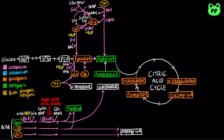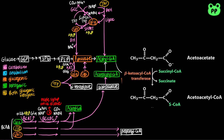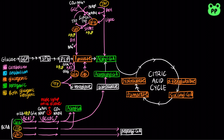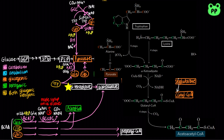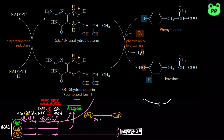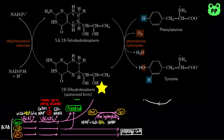The acetoacetate derived from leucine is subsequently converted to acetoacetyl-CoA by beta-ketoacyl transferase. Besides leucine, four other amino acids can also be degraded to acetoacetyl-CoA. Tryptophan is degraded to alanine and alpha-ketoadipate, which can be converted to acetyl-CoA through five steps. Lysine can also be degraded to acetoacetyl-CoA through alpha-ketoadipate. Phenylalanine is converted to tyrosine by phenylalanine hydroxylase, which is a mixed-function oxidase coupled to the reduction of oxygen to water, and also requires the cofactor tetrahydrobiopterin, abbreviated as BH4, which is oxidized to dihydrobiopterin, abbreviated as BH2. BH2 can then be reduced back to BH4 by dihydrobiopterin reductase, coupled to the oxidation of NADPH or NADH. Genetic defects in phenylalanine hydroxylase result in phenylketonuria, abbreviated as PKU, which causes neonatal vomiting and mental retardation.